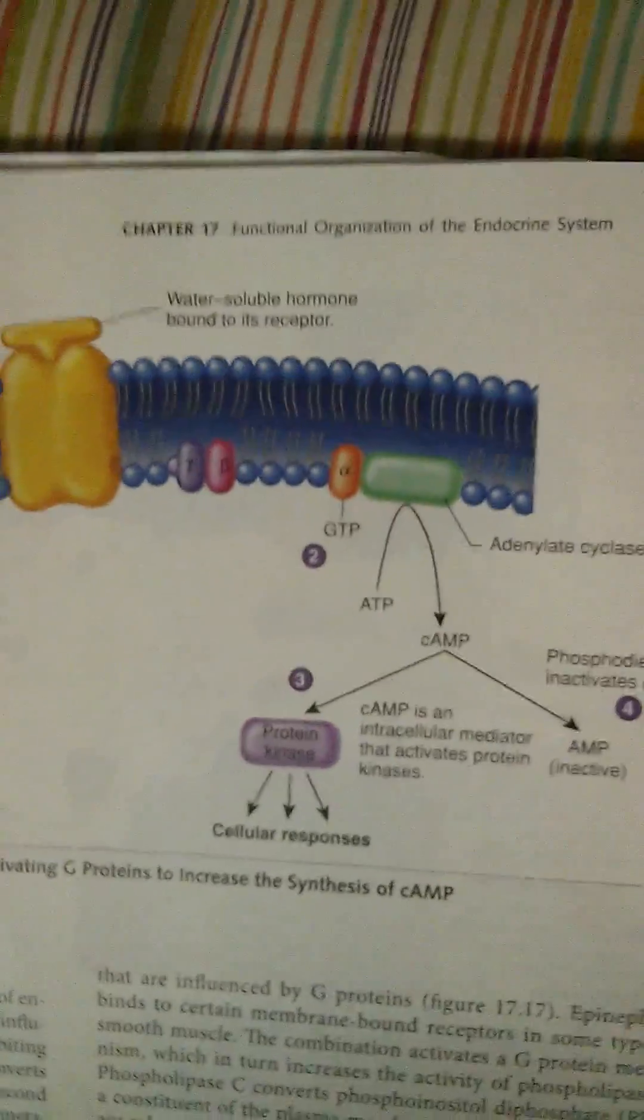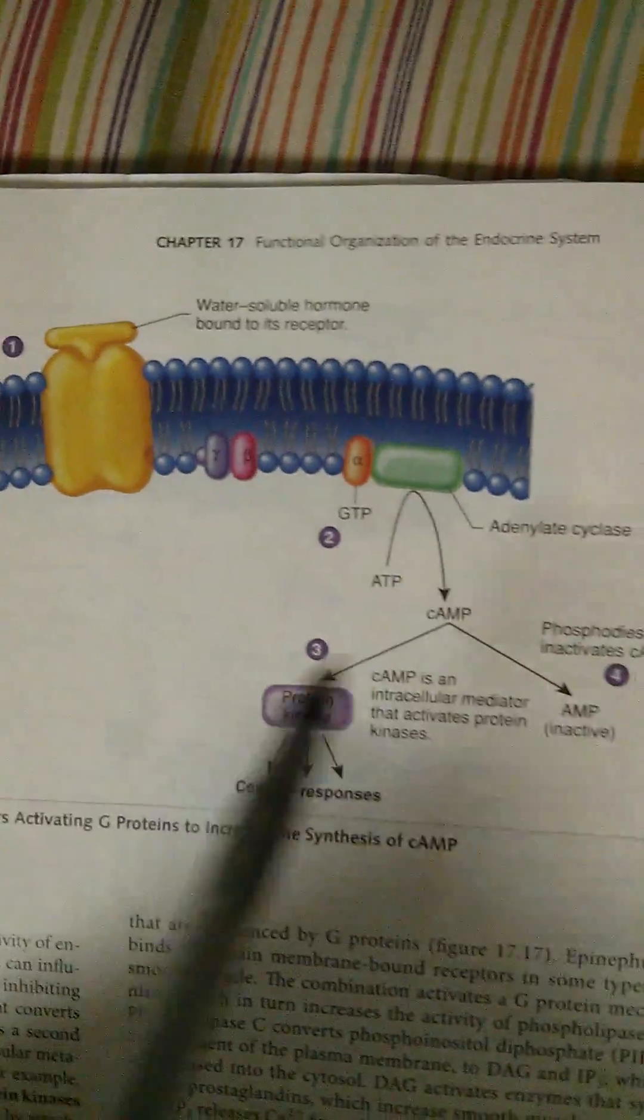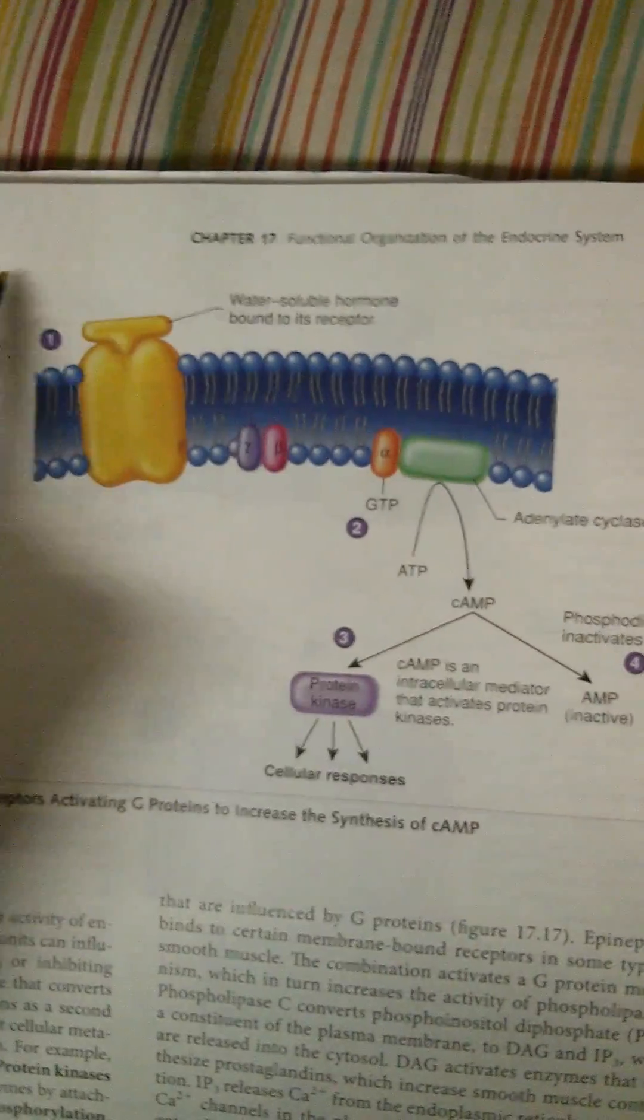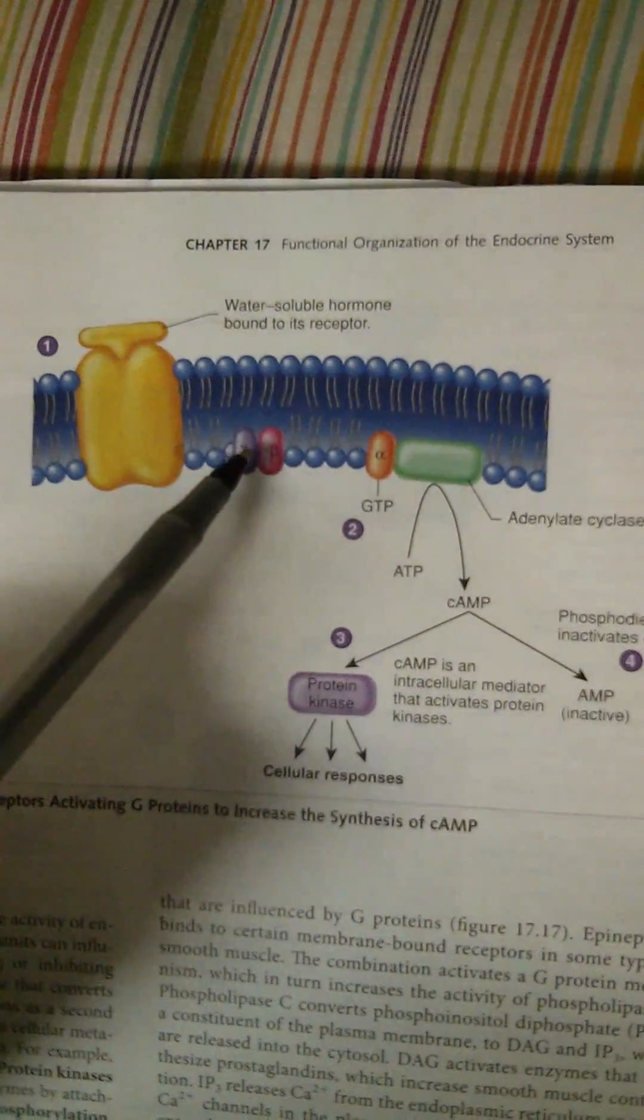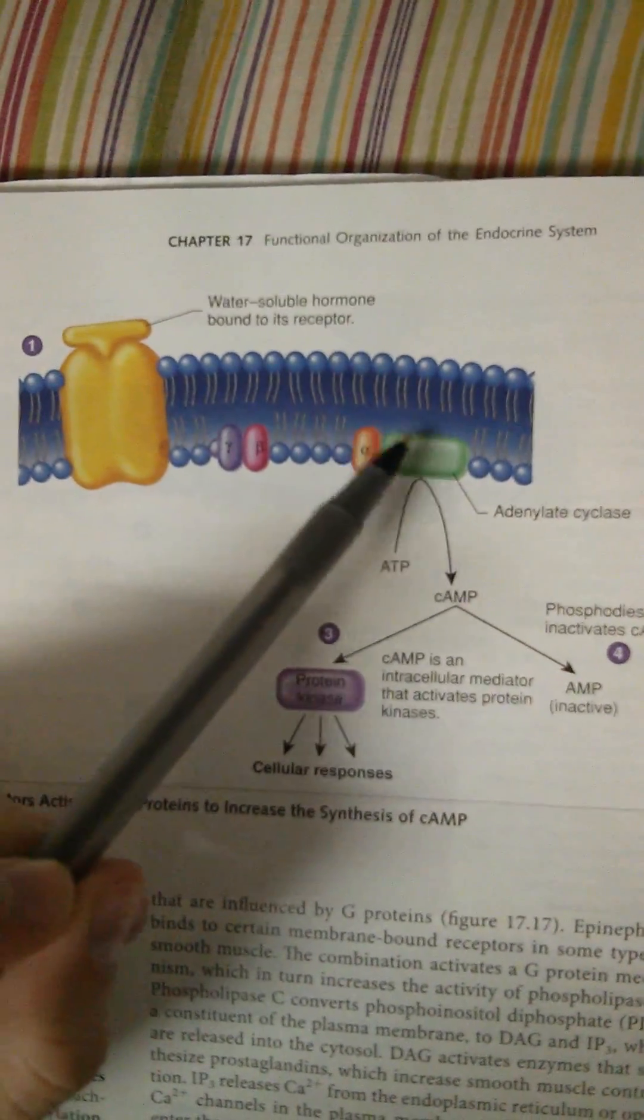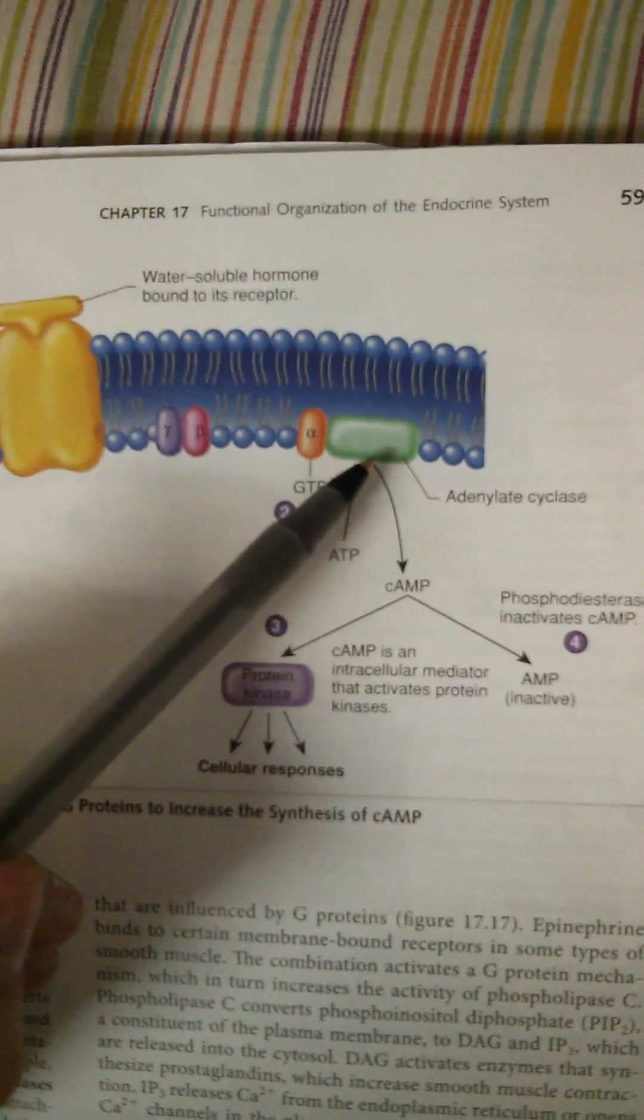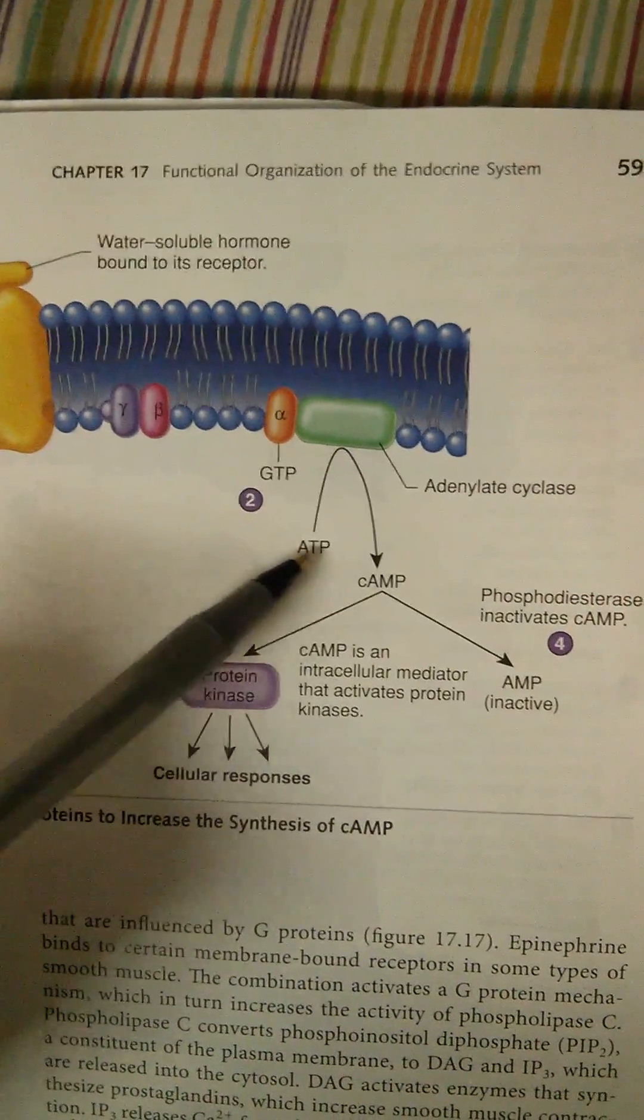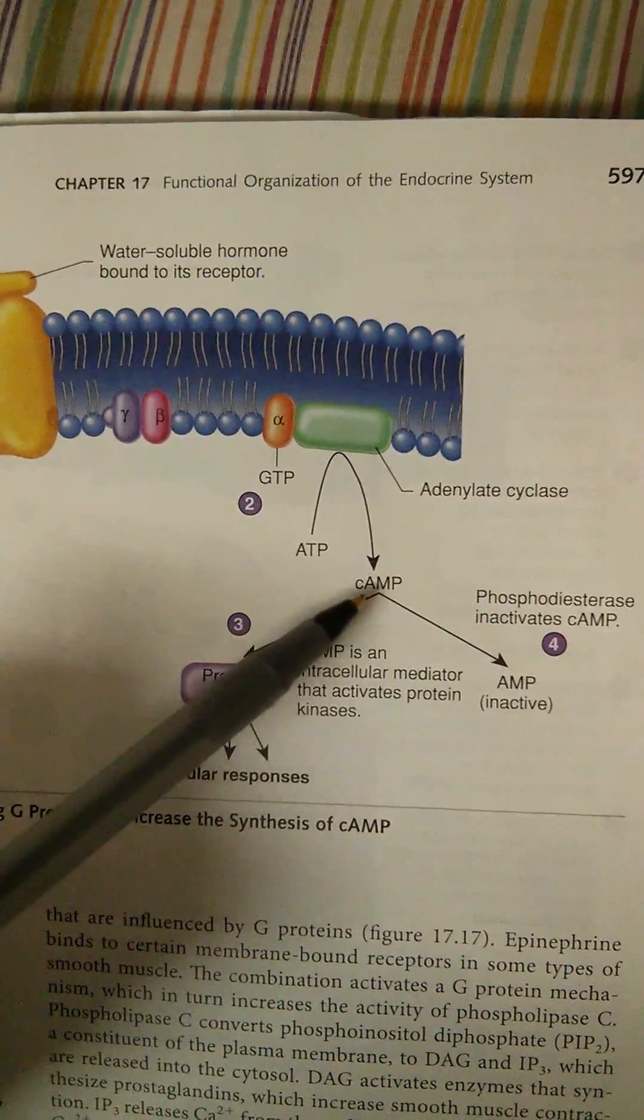Another example here is a protein that it binds to called adenylate cyclase. Now, when the hormone binds to the receptor, activates the G-protein, the alpha goes off alone, talks to adenylate cyclase. And what adenylate cyclase's job is, is to turn ATP, which is energy, into something called cAMP.